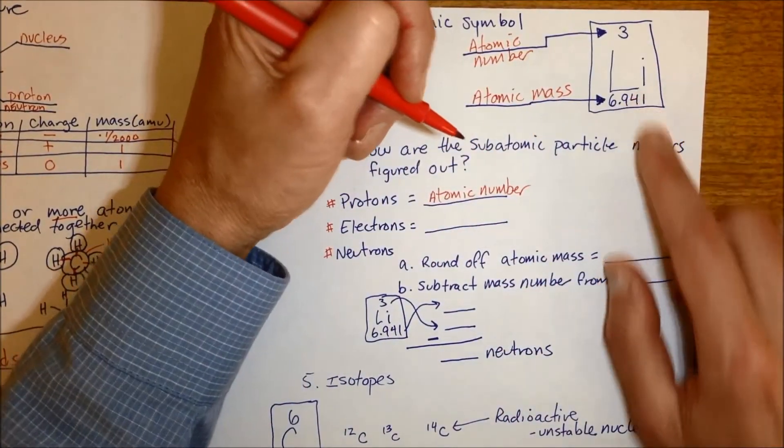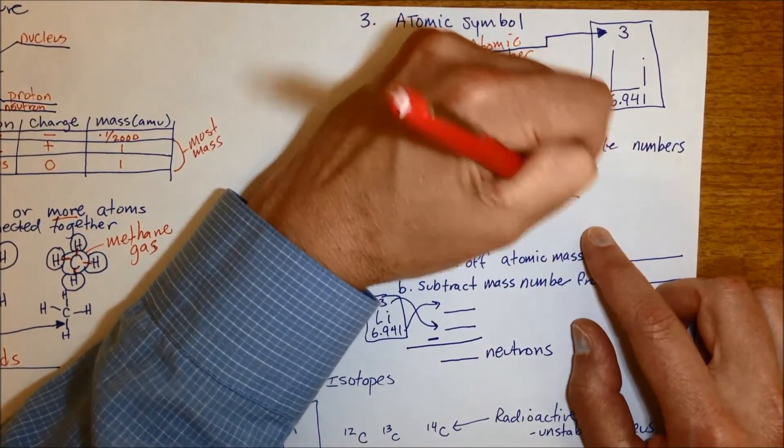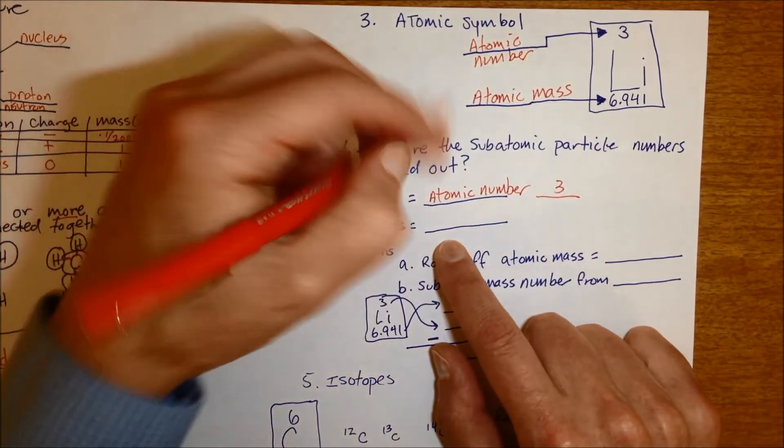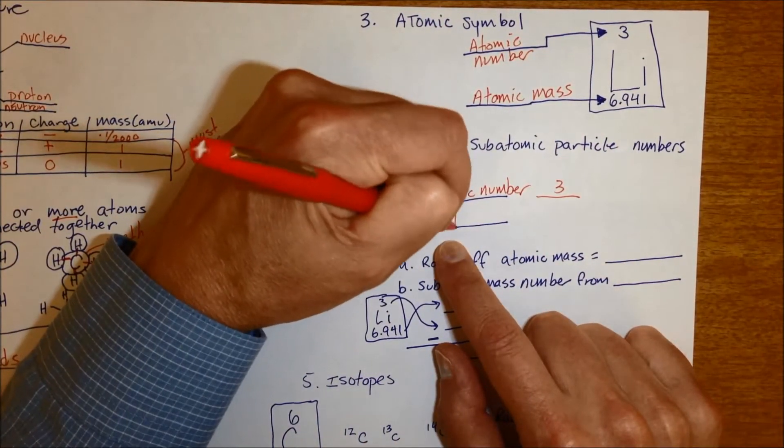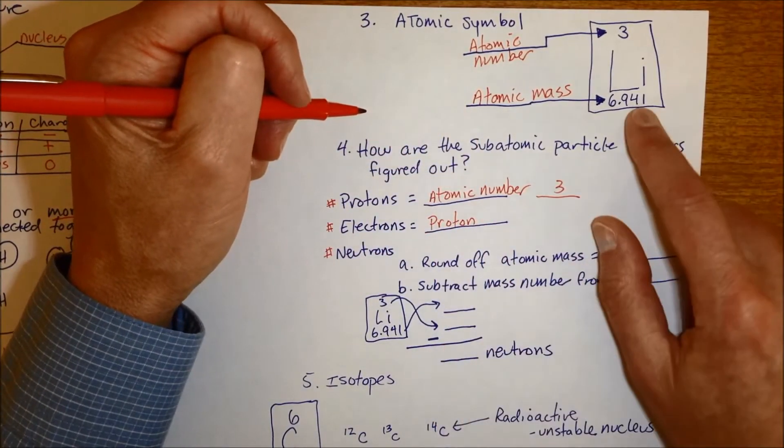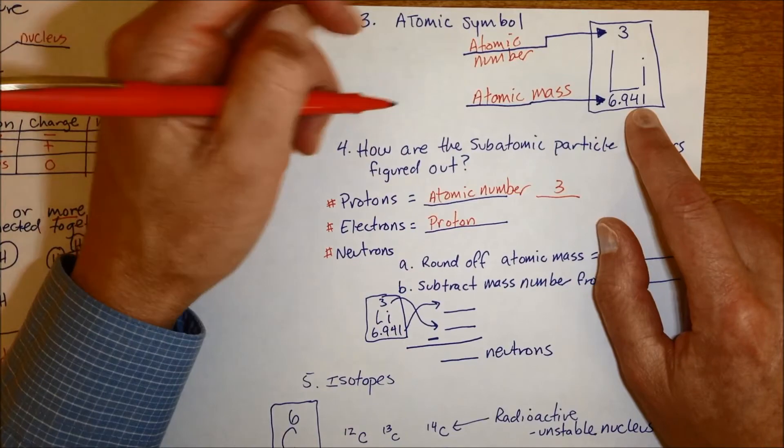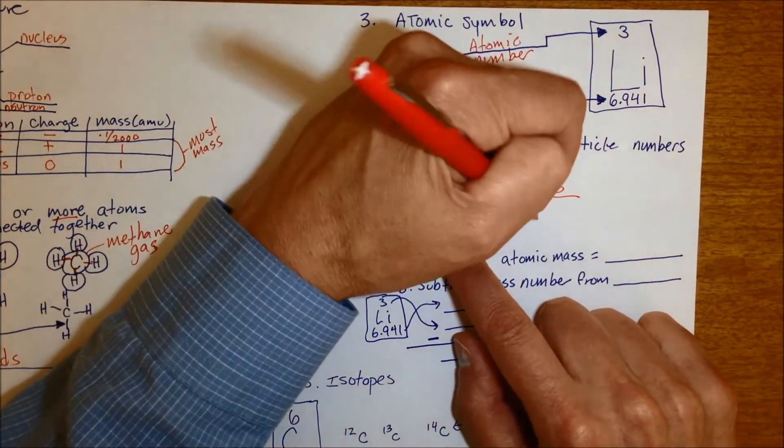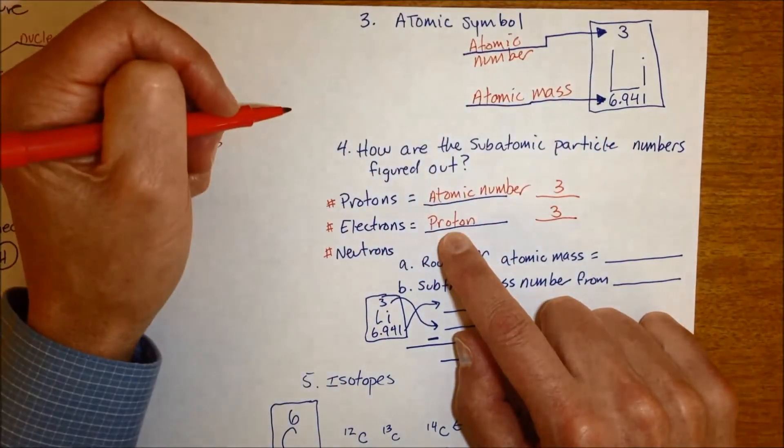Which for lithium right here, the atomic number is three, so it has three protons. Electrons, the number of electrons, is always equal to how many protons are in an unreactive atom. And if we're talking about lithium, if we continue this example, since there's three protons, the number of electrons it has is three as well.